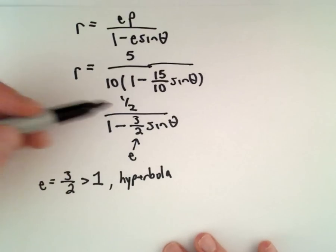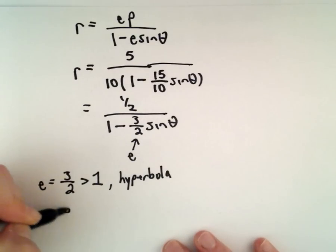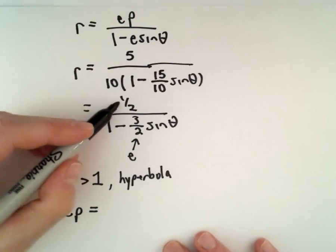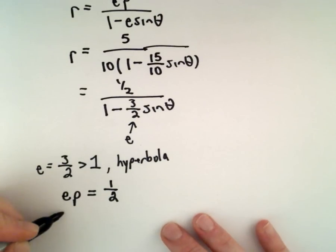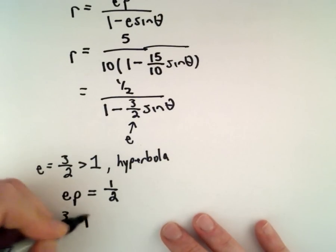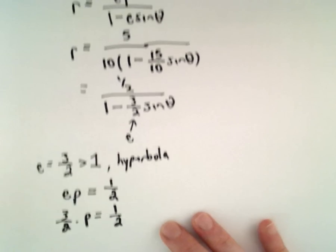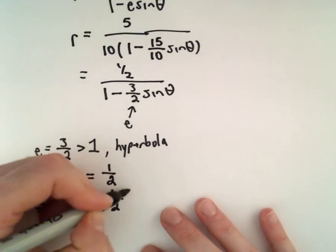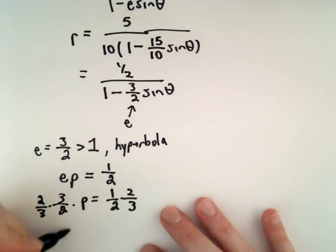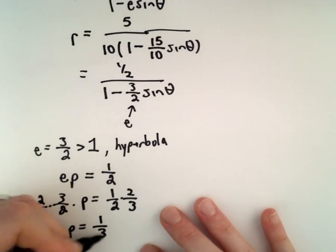We want the numerator to be in the form e times p, so e times p equals 1 half. We know that e is equal to 3 halves, so to solve for p we can simply multiply both sides by 2 thirds. So we'll have that p equals 1 third.